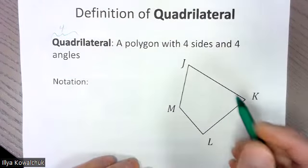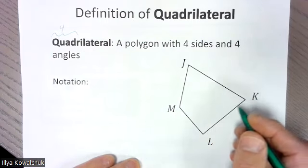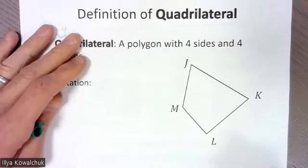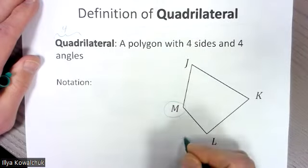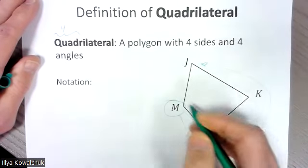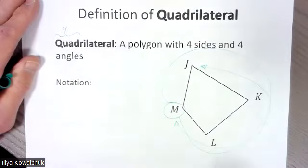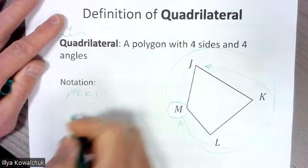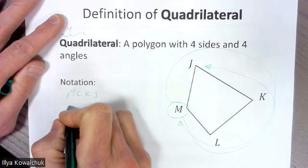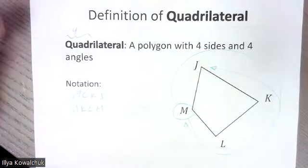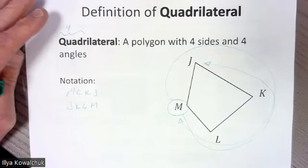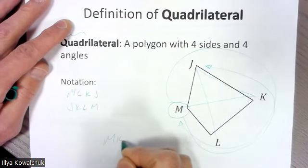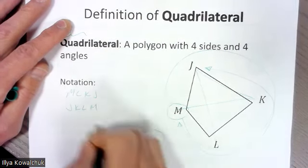Now for notation — we name these figures by their vertices. What we do is start with a point and go around in one direction. It doesn't matter which direction or which point you start with, so we could start with M and go either way. But we can't skip around — so M-L-K-J or J-K-L-M are valid, but M-K-J-L is not a viable name for this polygon.